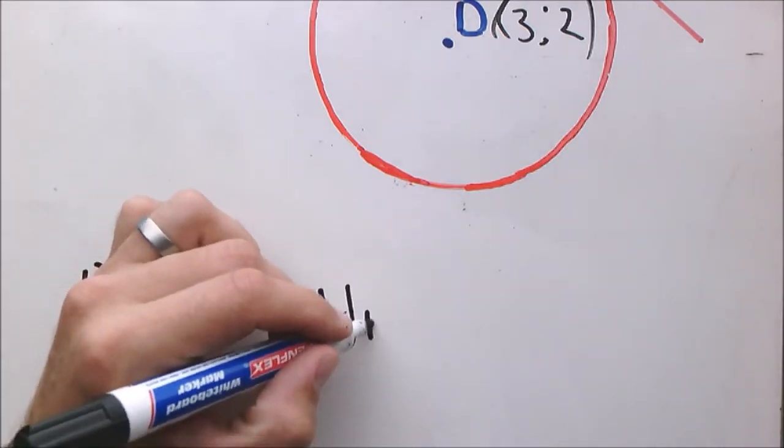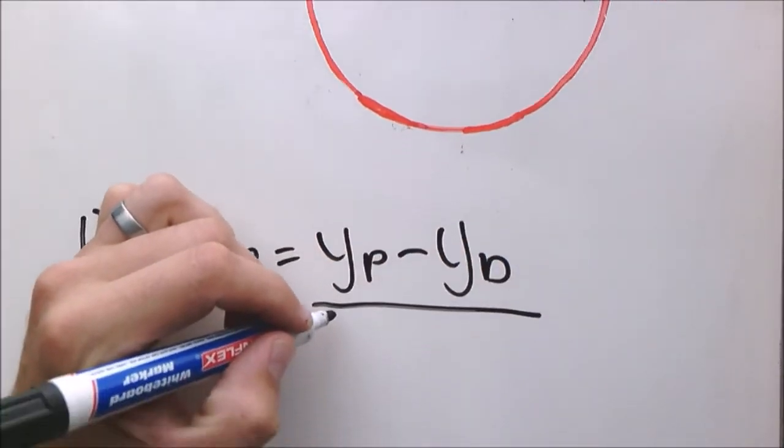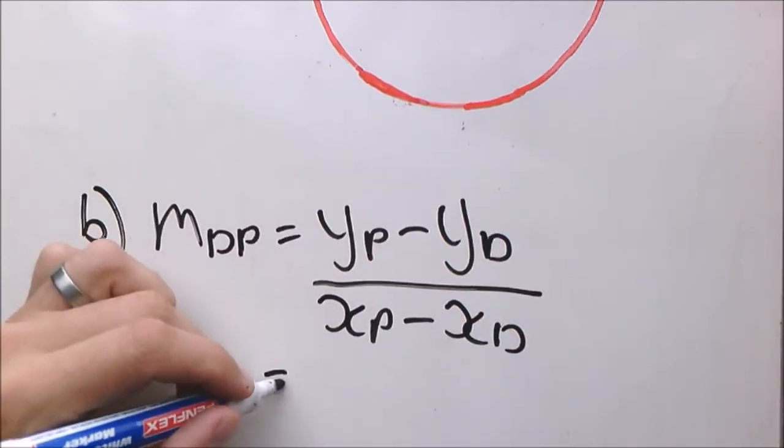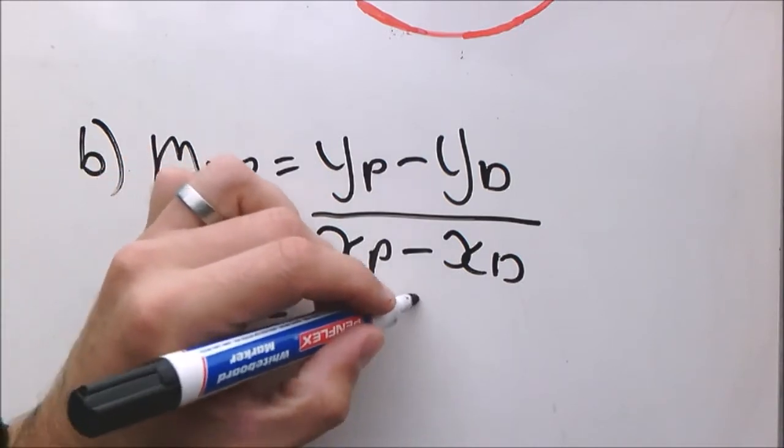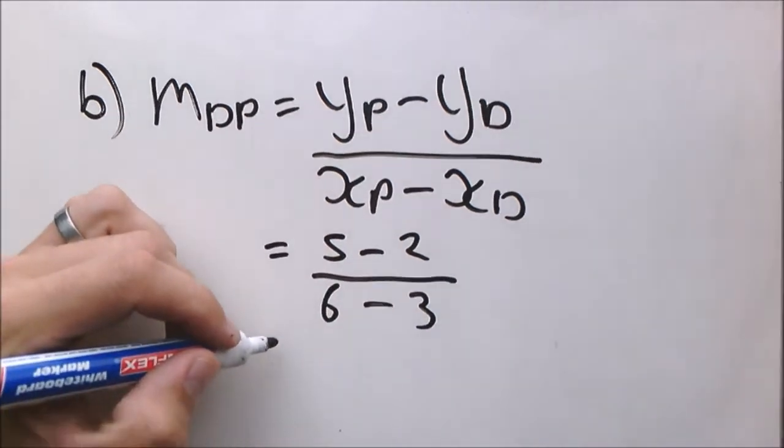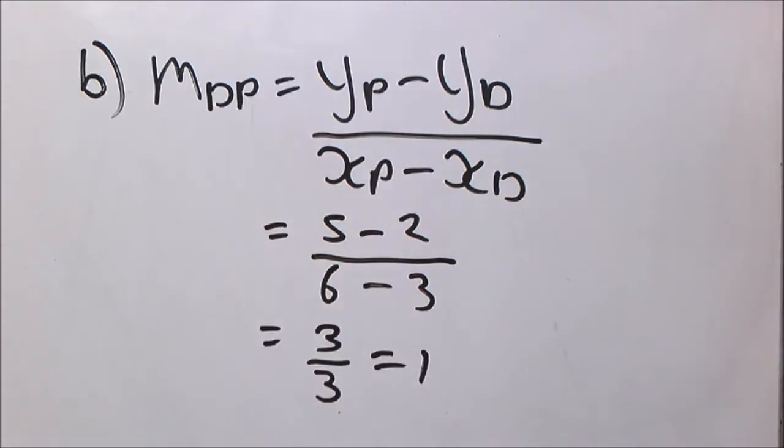To get the gradient, we will say yp minus yd divided by xp minus xd. You substitute that in, then you get 5 minus 2 over 6 minus 3, so equal to 3 over 3 which is equal to 1.